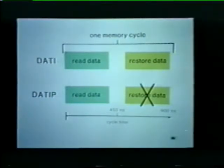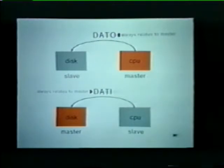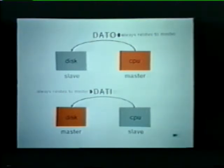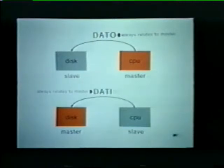Of course, we must always follow a Data IP with either a Data O or Data OB to load the core with the new data. There's one point that must be emphasized: the direction of the data transfer is always designated with respect to the master device. In the example at the top, the CPU is master and we have a Data O — the transfer is out of the CPU. In the second example, the disk is the master and we have a Data I — the transfer is into the disk.